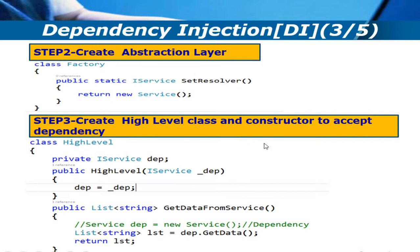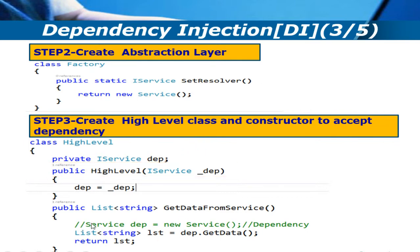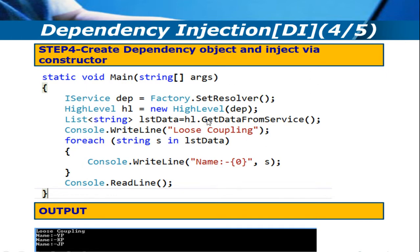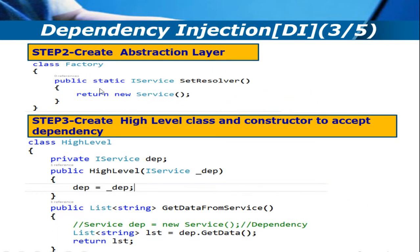In the high level class, I am adding a constructor which expects the dependency — the low level class object. Instead of directly creating the object of the dependency inside the high level class, we comment that line and get the dependency object via the constructor. This is my abstraction layer — the factory class gives me the dependency object.